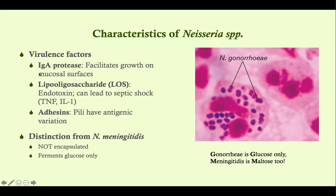Some characteristics and virulence factors: IgA protease helps it grow on mucosal surfaces and invade the innate immune system. It has lipo-oligosaccharide, an endotoxin that can lead to septic shock. It also has adhesins that demonstrate antigenic variation, which is why you can get repeated Neisseria gonorrhea infections. The key distinction from Neisseria meningitis is that gonorrhea is not encapsulated and ferments glucose only — not maltose. A quick mnemonic: gonorrhea is glucose only; meningitis is maltose too.